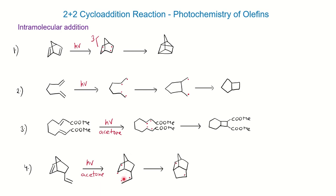You can form the product: first the addition reaction is shown, and in the next step you show the formation of the 2+2 cycloaddition product. It is very simple to form the product having the 2+2 cycloaddition reaction for such systems.